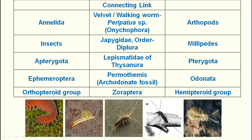Between Apterygota (wingless insects) and Pterygota (winged insects), the connecting link is Lepismatidae of the order Thysanura. Between Ephemeroptera (mayfly/dayfly) and Odonata (dragonfly/damselfly), the connecting link is the fossil Permothomis, also called Archeodonata.